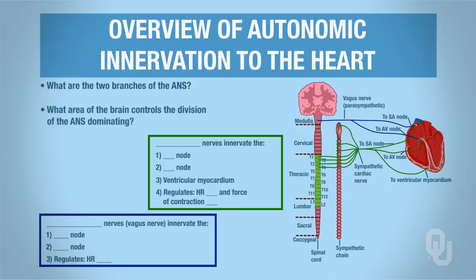Question 1: What are the two branches of the autonomic nervous system? We have been studying the brain for quite a while now, so you know that the autonomic nervous system has two branches: the parasympathetic and sympathetic branches.